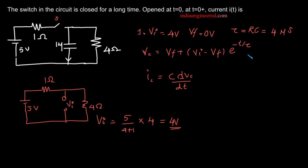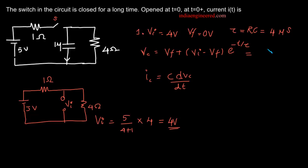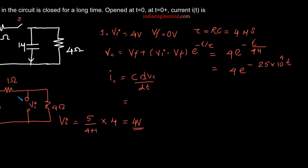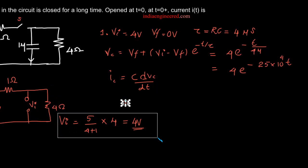Now we will find out Vz. We have V_final equal to 0, so the voltage expression becomes: Vz equals 4·e to the power minus t divided by 4 microseconds, which is 4·e to the power minus 25 times 10 to the 4 times t. Now we will find out the current through the capacitor.